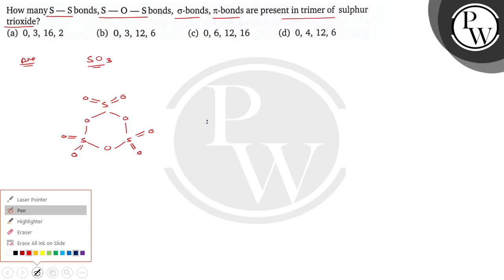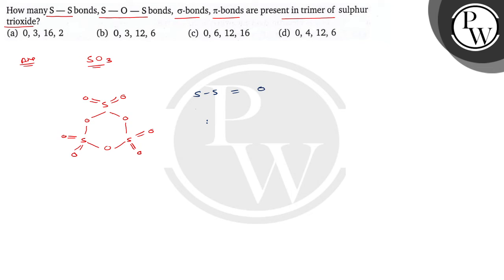Let's find out the number of S-S bond first, sulfur-sulfur bond. There is no sulfur-sulfur bond here, so it is 0. S-O-S bond, sulfur-oxygen-sulfur bond. There is 1, 2, and 3 sulfur-oxygen-sulfur bonds, so it is 3.